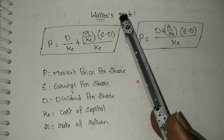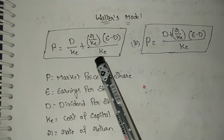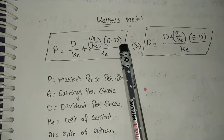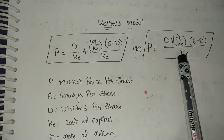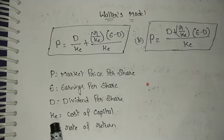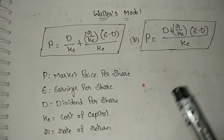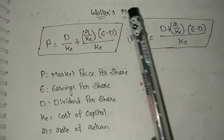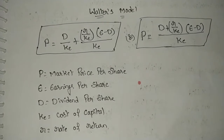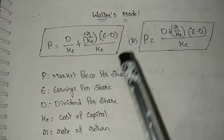Here we are going to discuss the Walter's model, which is the first model of relevance theory of dividend decisions. This model falls under relevance theory because, according to it, the dividend payout will have an effect on the market value of the firm. So the Walter's model comes under the relevance theory.